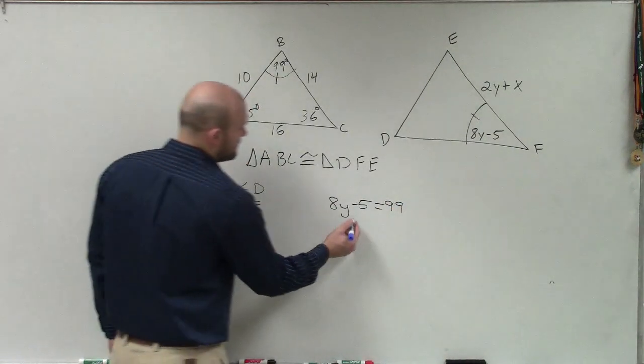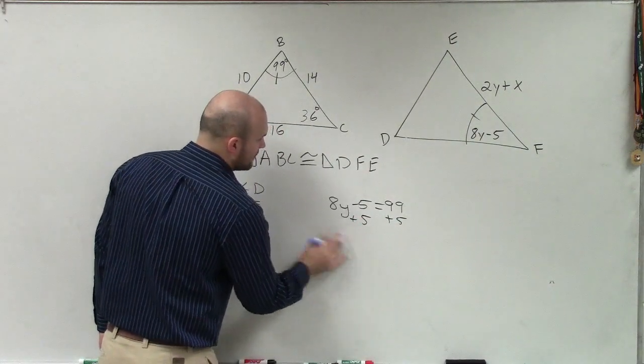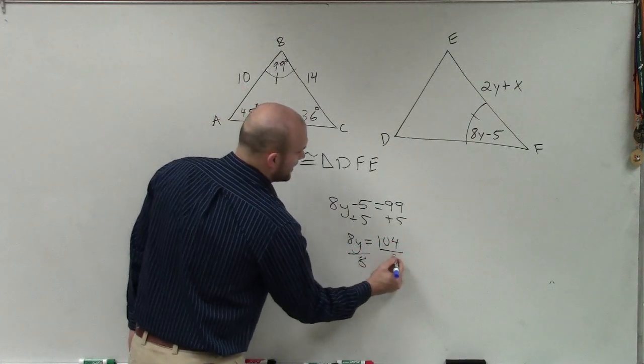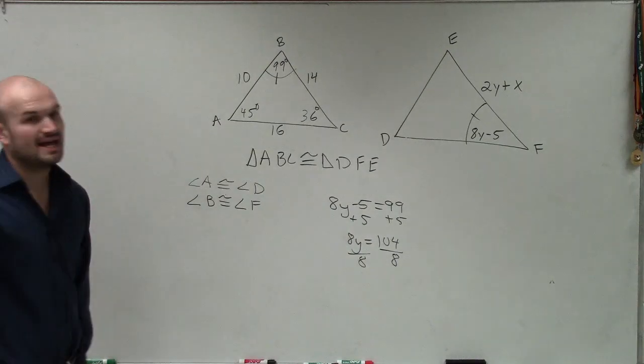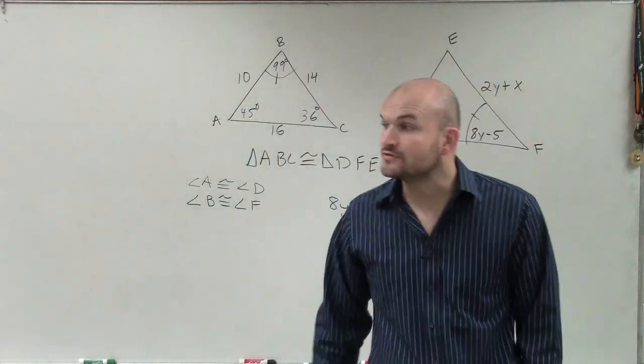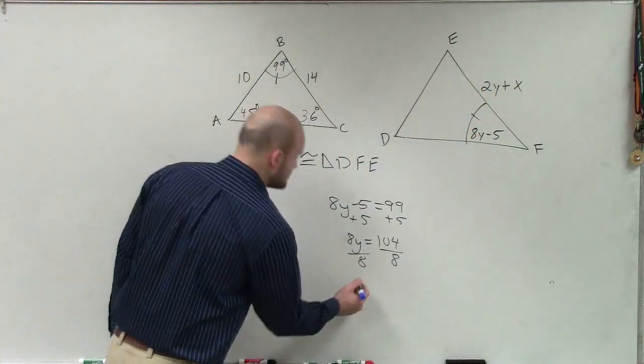So now I add 5. I have 8Y equals 104. Divide by 8. Divide by 8. We know that 8 goes into 80 10 times, leaving me with a remainder of 24. 8 goes into 24 three times, so therefore, Y equals 13.